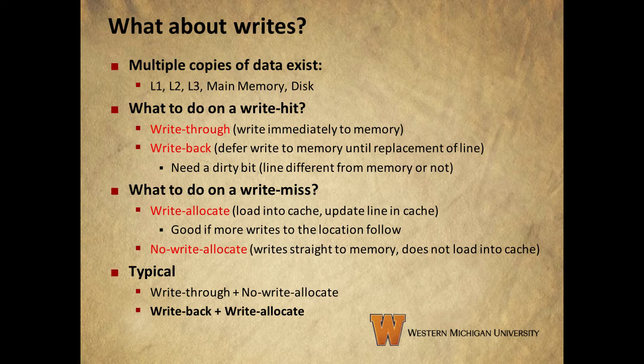Reads are fairly straightforward, but programs don't just read data — they can write it too. So how do we deal with writing data through the levels of memory? If a program writes data to the cache that it already contains — referred to as a write hit — we have two basic options. We can write-through, meaning we write the data immediately back through the levels of caches and memories. This is simple but generates a lot of traffic. A write-back approach means we defer writing data back through the hierarchy until the line gets replaced. In this case we need another bit called the dirty bit to indicate whether the data differs from what's currently in main memory.